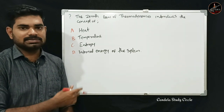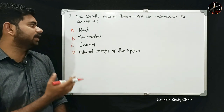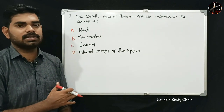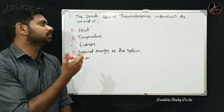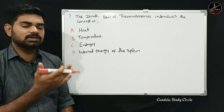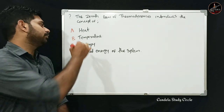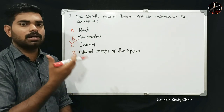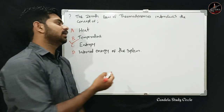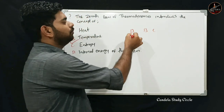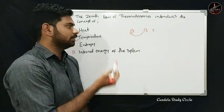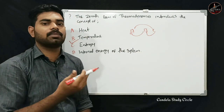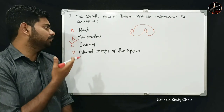The zeroth law of thermodynamics introduces the concept of — Option A: heat, Option B: temperature, Option C: entropy, Option D: internal energy of the system. The zeroth law of thermodynamics introduces the concept of temperature. Option B is correct.